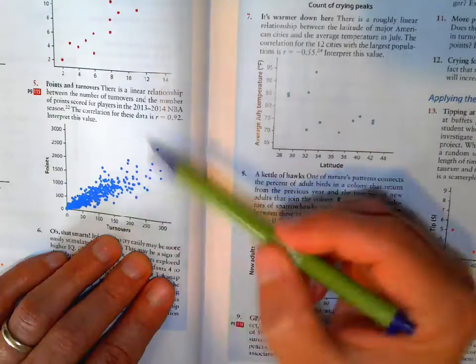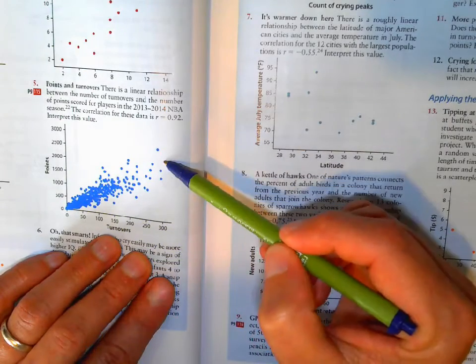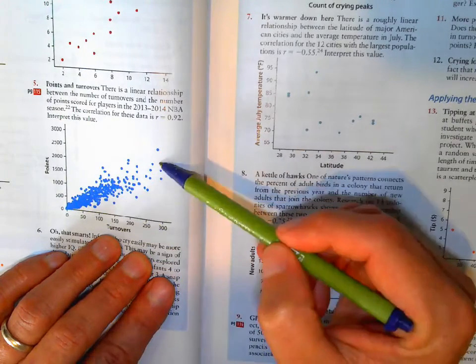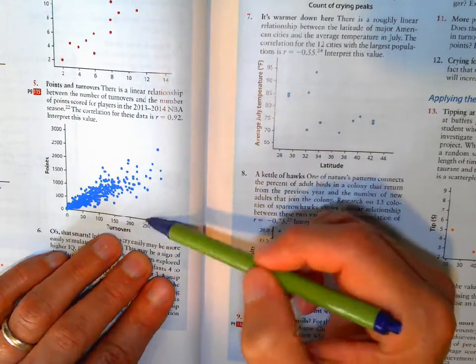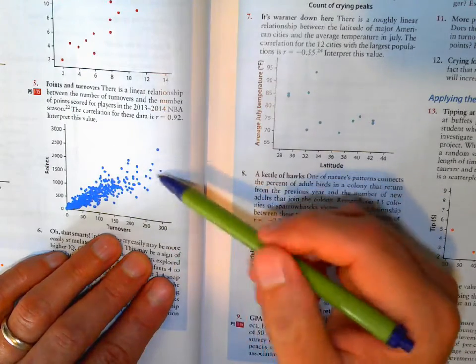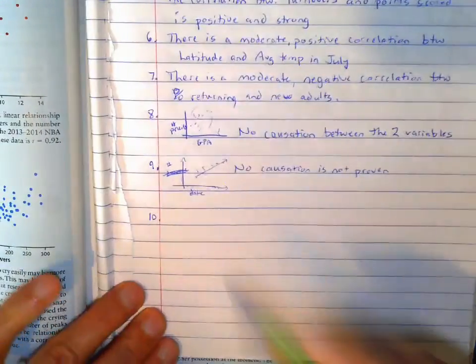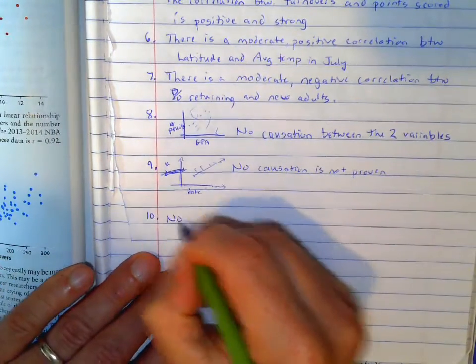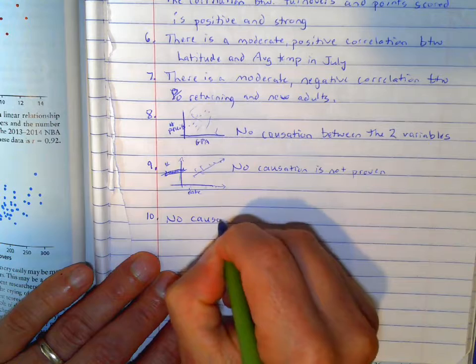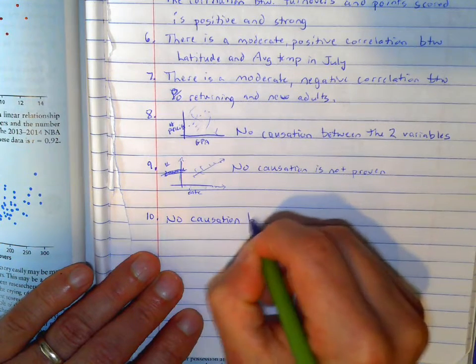Once again, this does not cause that. There's a relationship between them. There's an association between them. But this does not cause that. It has to do with more playing time. The more somebody plays, the more likely they are to turn over and to score more points. So once again, there is no causation between the variables.